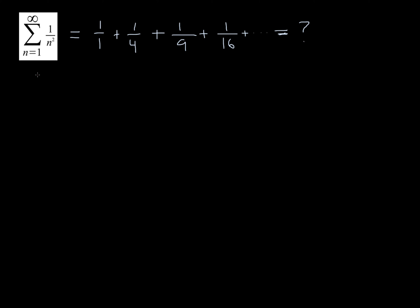The first thing we're going to do is write out the Taylor series of sine of x. This equals x minus x cubed over 3 factorial, plus x to the 5th over 5 factorial, minus x to the 7th over 7 factorial, and so on. If you've taken calculus, you should know this.